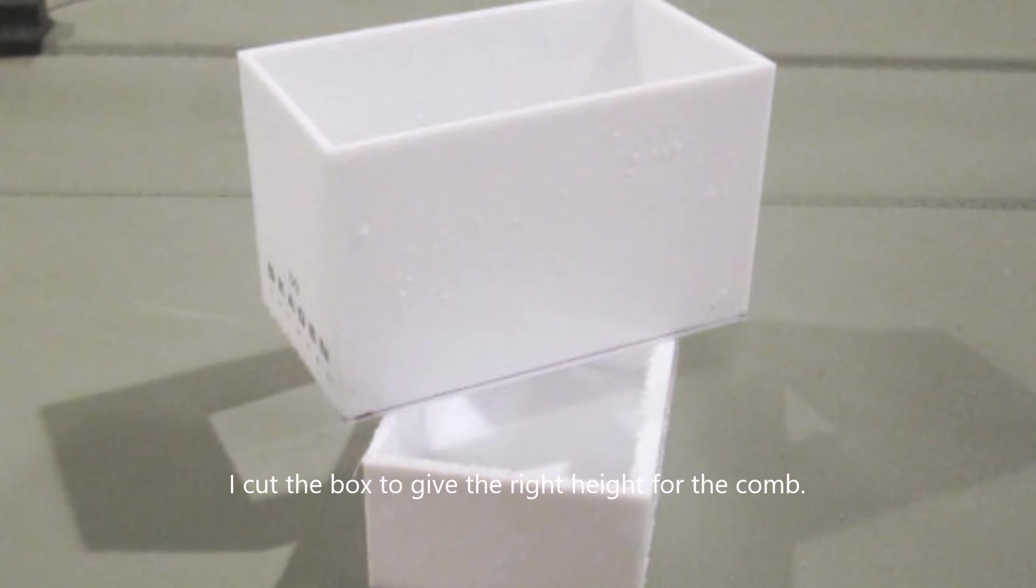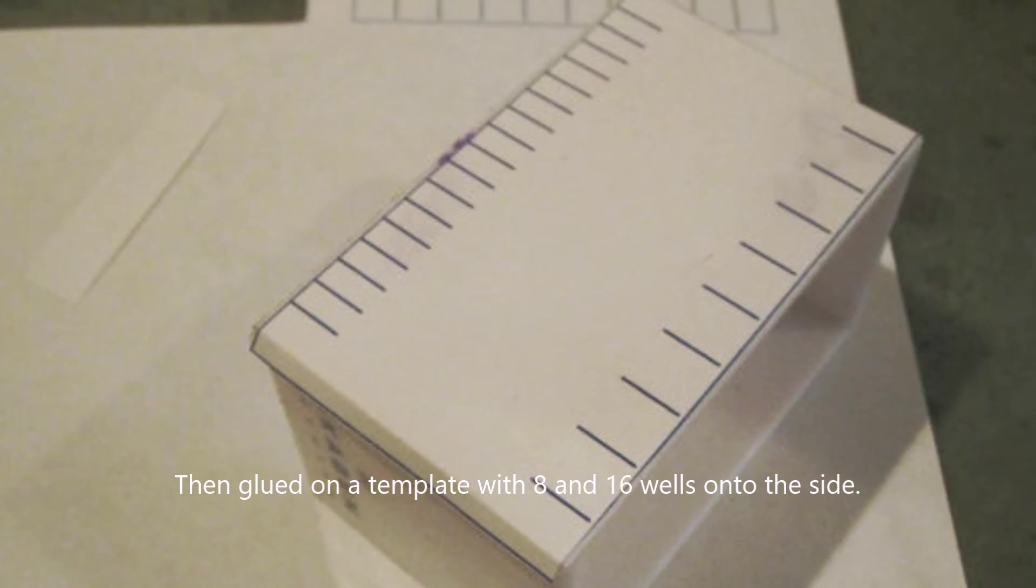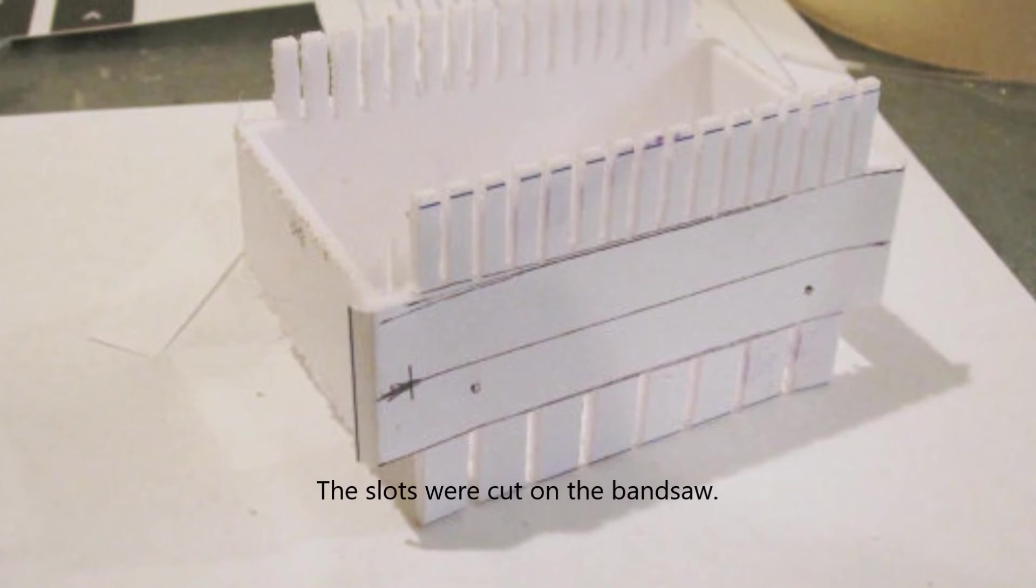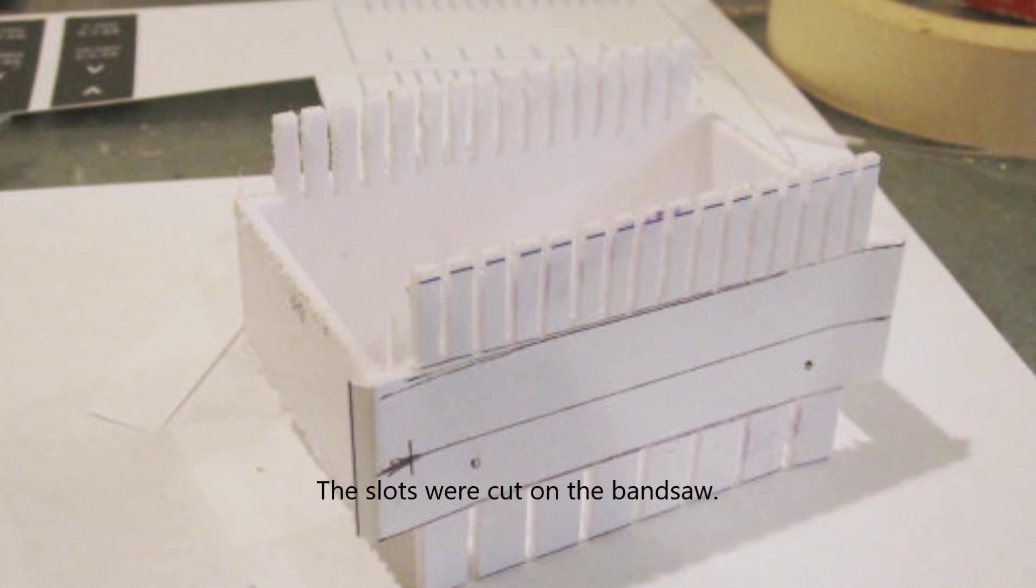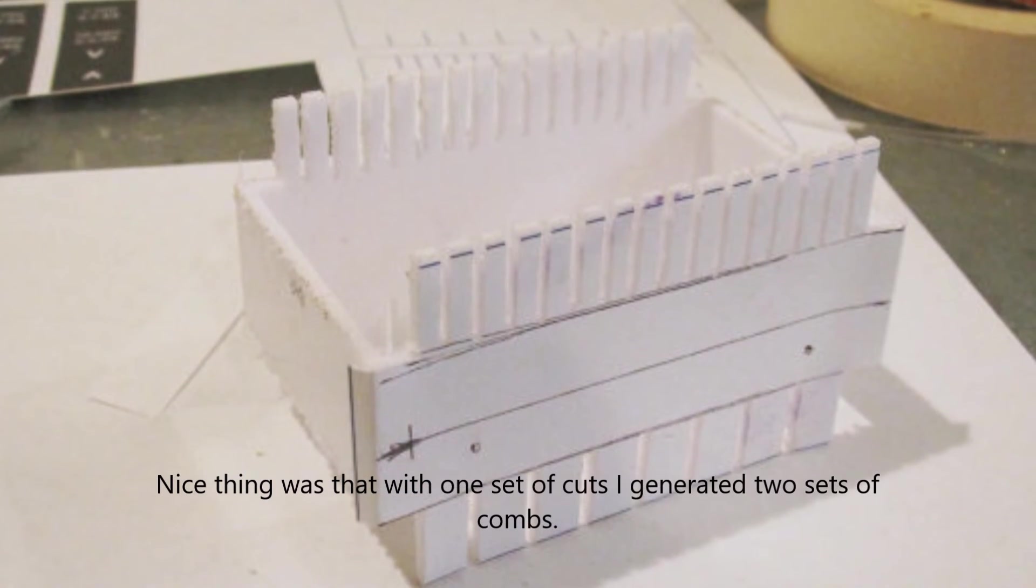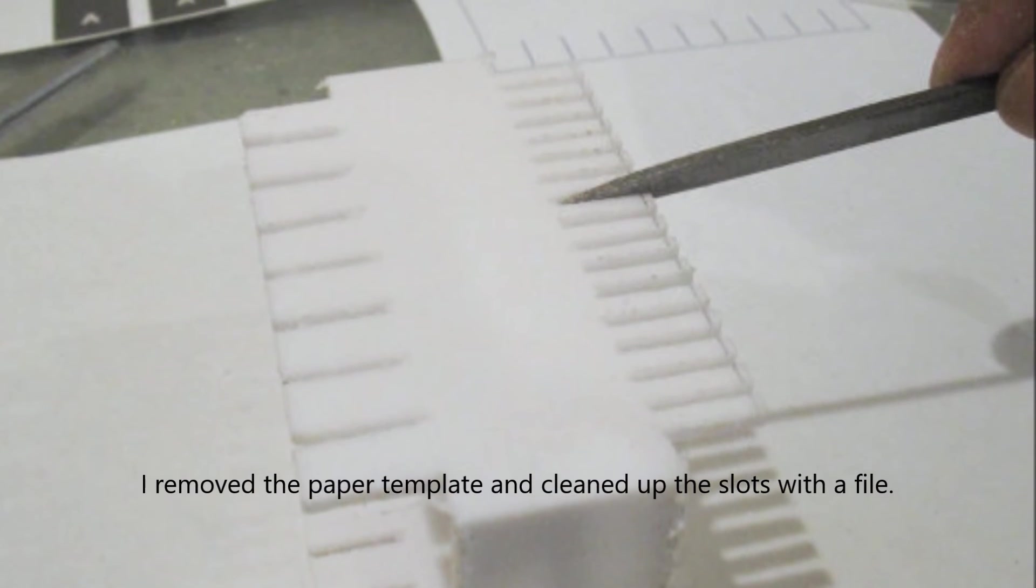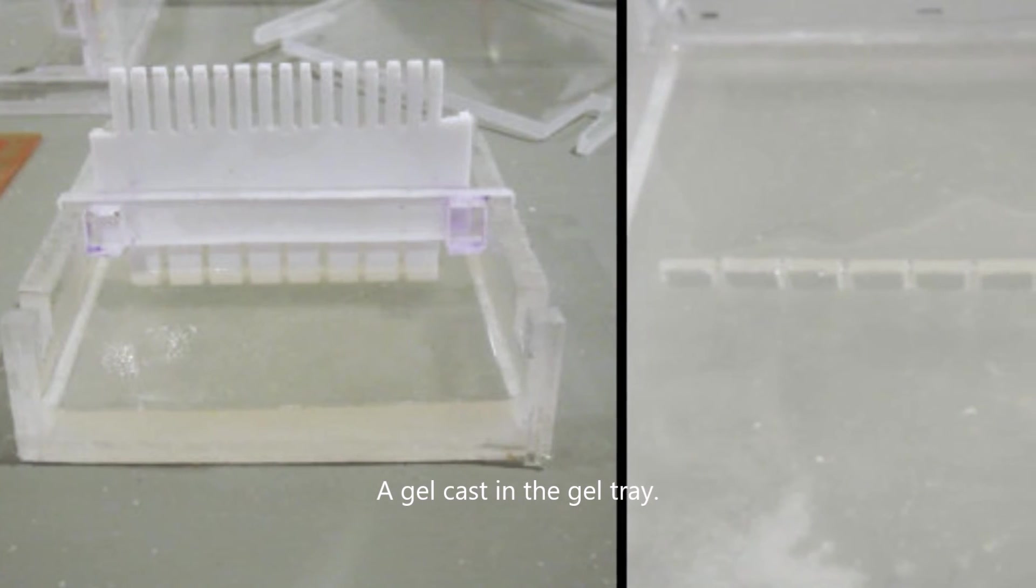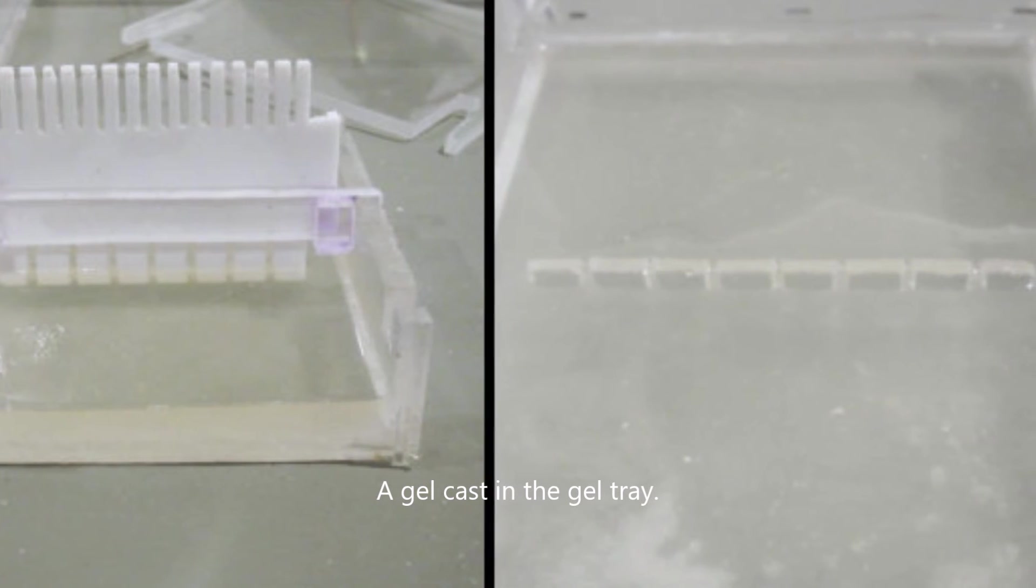I cut it on the bandsaw to the right vertical height. I drew a template of where the slots for the wells are, glued it onto the thing and then cut the slots on the bandsaw. Nice thing is because it was a box shape, in one cut I was essentially getting two slots done, so twice the efficiency. I then removed the paper, smoothed the rough edges from the saw with a file and thin sandpaper. And then I did a cast of the gel. By the way, the slots are held with a screw on the crossbeam.